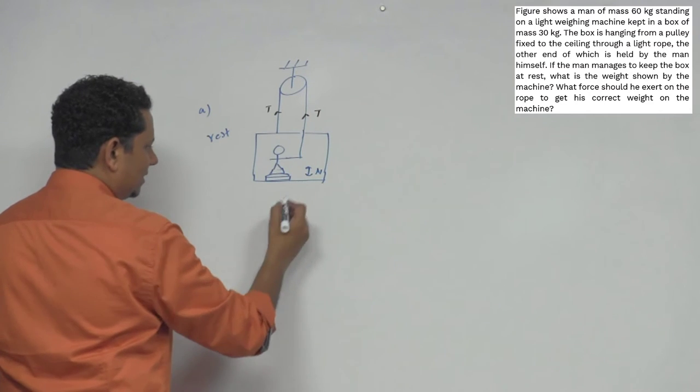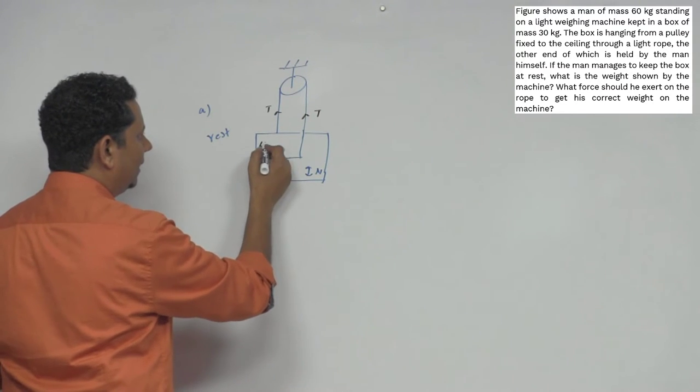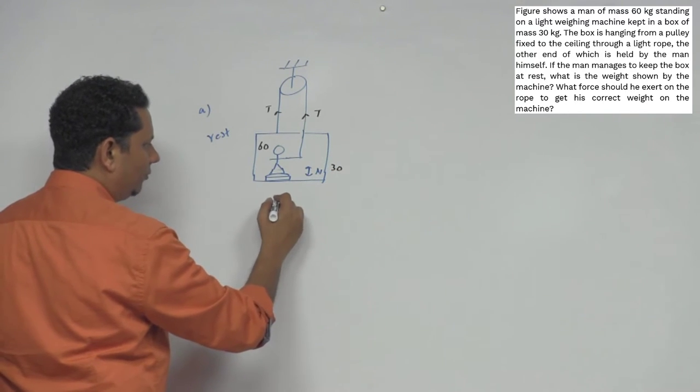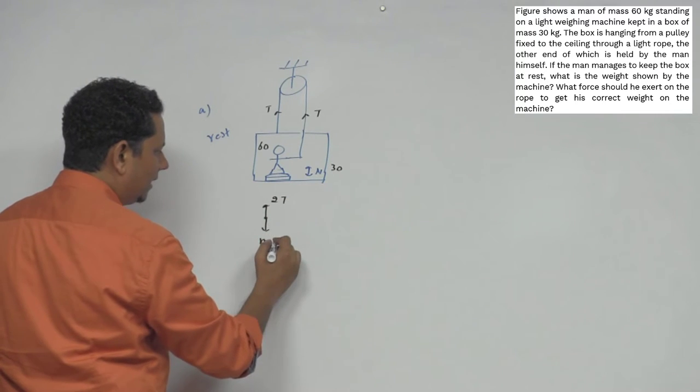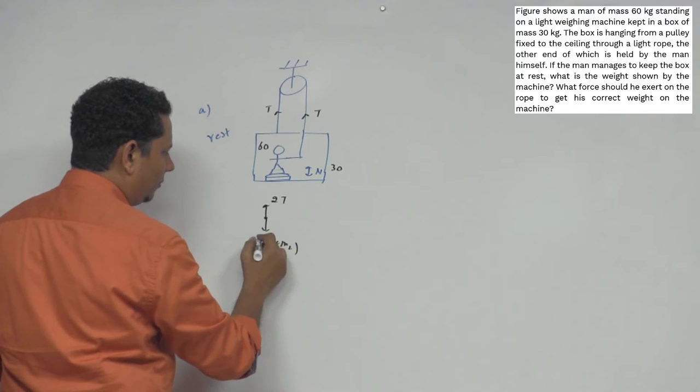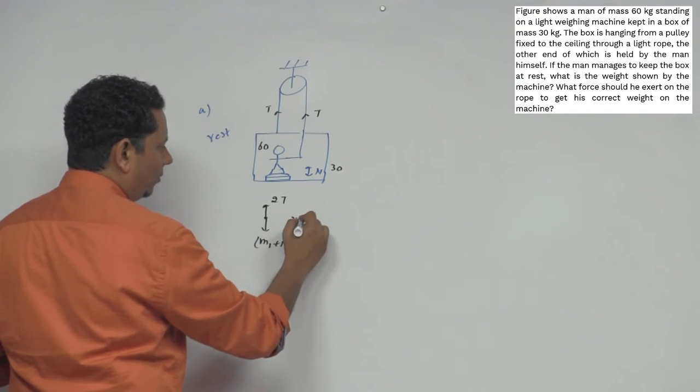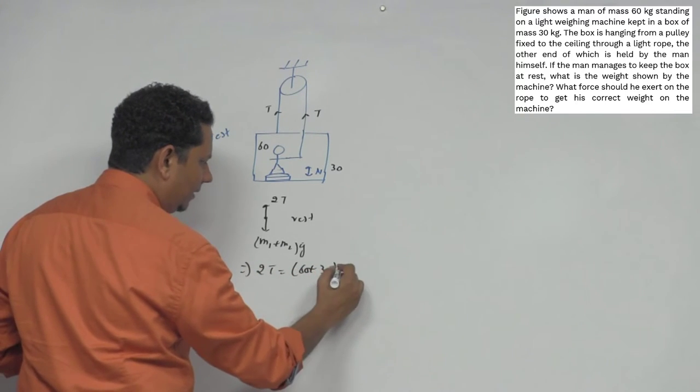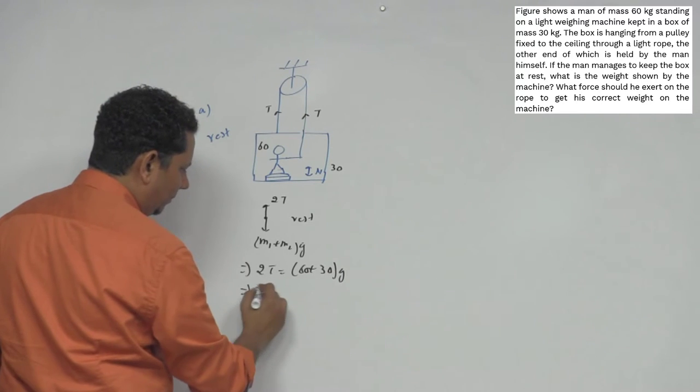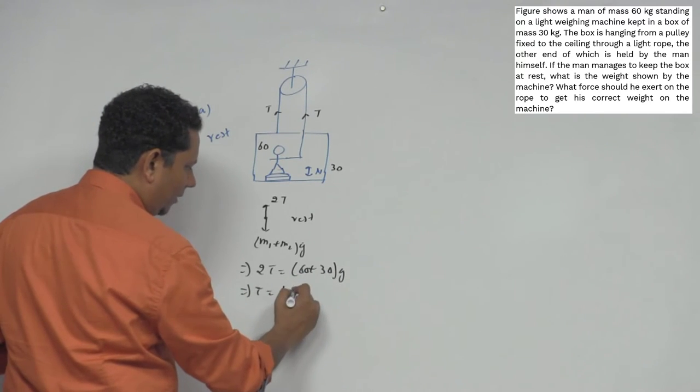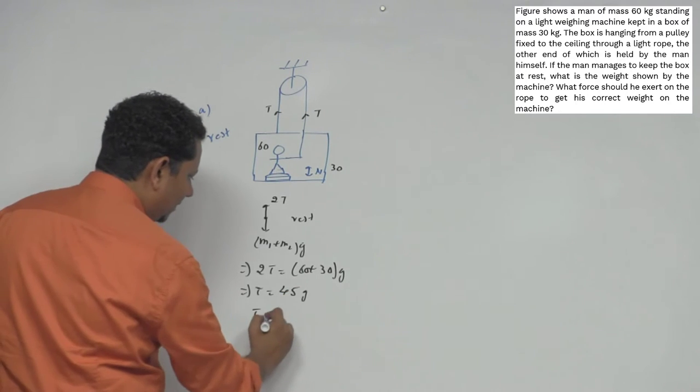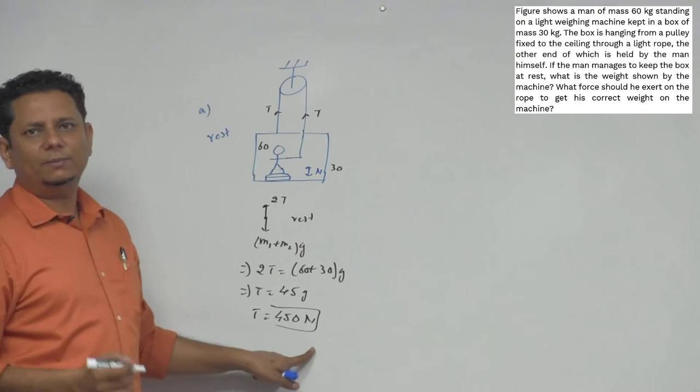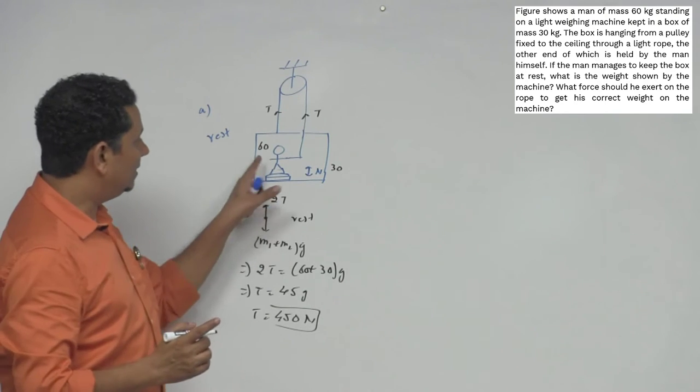For the system FBD: the man weighs 60 kg, the box weighs 30 kg. The forces are 2T upward and (M1 + M2)g downward. Since the system is at rest, 2T equals (60 + 30)g, which gives T equals 90/2 times g, equals 45g. So tension is 450 Newtons.